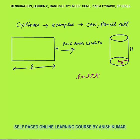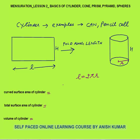Now let's discuss the formula based on cylinder. The first concept is curved surface area of cylinder — that is the area of the curved part. This equals the area of the rectangle, because the rectangle when folded becomes the curved part of the cylinder. Area of rectangle is l × h, and since l becomes the circumference 2πr, the curved surface area of cylinder is always equal to 2πrh, where r is the radius and h is the height of the cylinder.